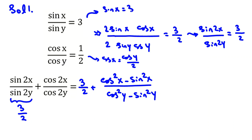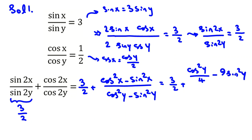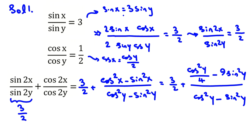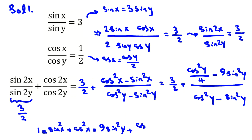So if I replace, cosine squared x is cosine squared y over 4, and sine squared x is 9 sine squared y. We should find cosine squared y and sine squared y. Using sine squared x plus cosine squared x equals 1, we substitute: 9 sine squared y plus cosine squared y over 4 equals 1.